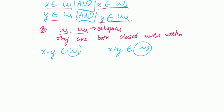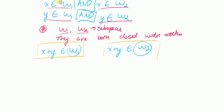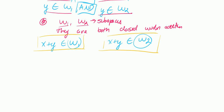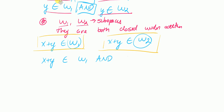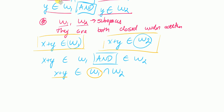So I know that X plus Y belongs to W1 and X plus Y belongs to W2. By the definition of intersection, that means X plus Y belongs to W1 intersect W2. I've now shown the second part of the proof.